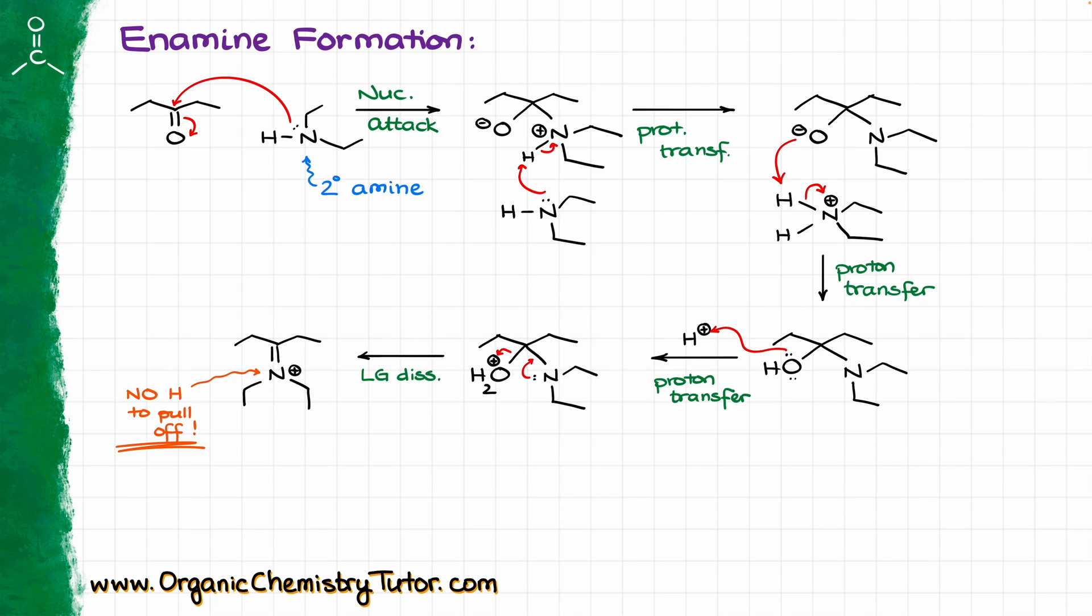But here we have a problem. We no longer have a proton on the nitrogen that we can easily pull off and stabilize our molecule. So what are we going to do in this case? Well, in this case, we're actually going to use one of the nearby hydrogens on the carbon. Here, it doesn't matter if I use hydrogens on this carbon or if I use hydrogens on that carbon. Both of those are symmetrical, both of those are identical, so it really doesn't matter. If the molecule was not symmetrical, then you would potentially make multiple products. So we are going to bring some sort of a base, anything with an electron pair that is floating in our solution here, like another equivalent of our amine, for instance, pull that nearby hydrogen off and that's going to give us our enamine as our final product.